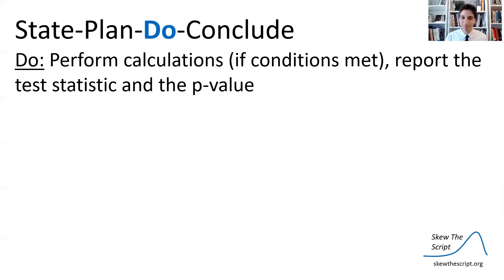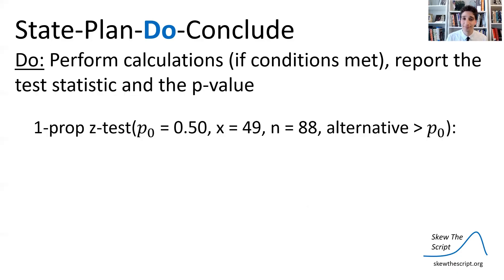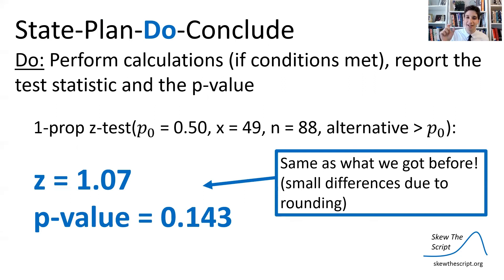Do: perform the calculations and report the test statistic and p-value. You can do what we did earlier in this video, or you can use calculator steps — pause the video and try this out on your own calculator. Once you do the calculator steps, show exactly what you did: p-naught, x, and the alternative. Make sure to label everything so you get full credit on the AP exam. Then make sure to report your test statistic, z = 1.07, and p-value = 0.143. Note this is a small difference from the test statistic and p-value calculated before — it's very close, and that's just due to differences in rounding.